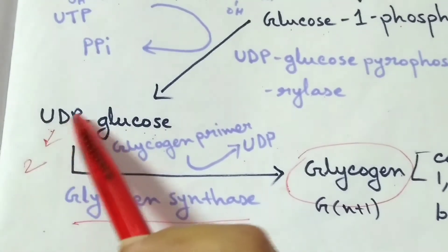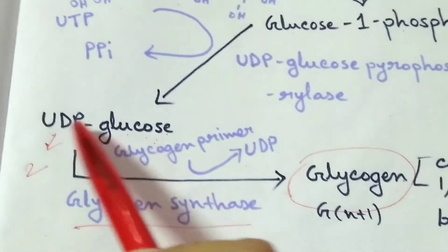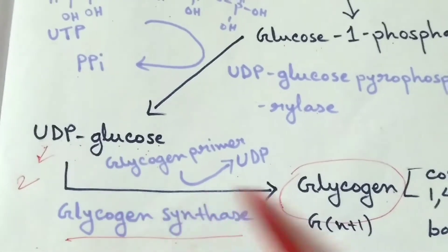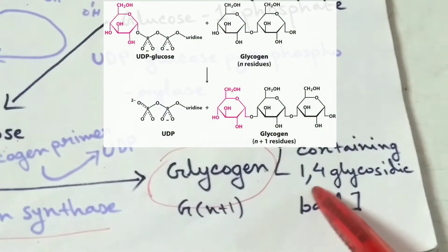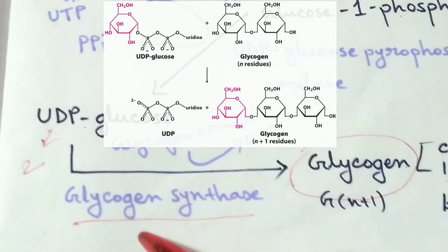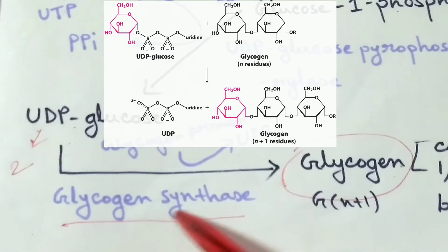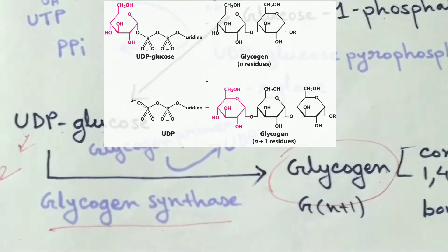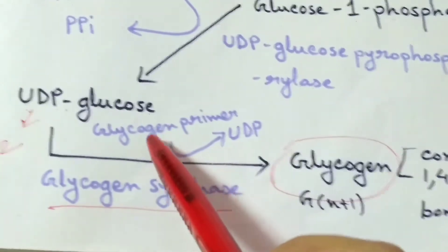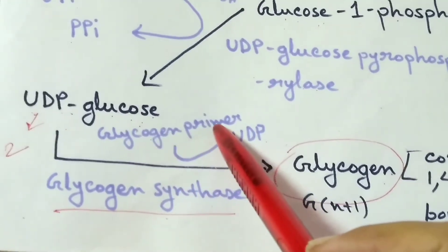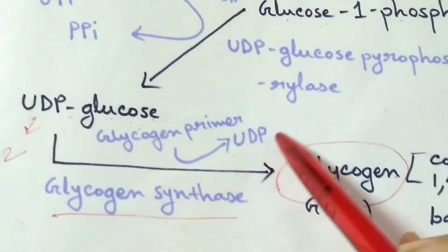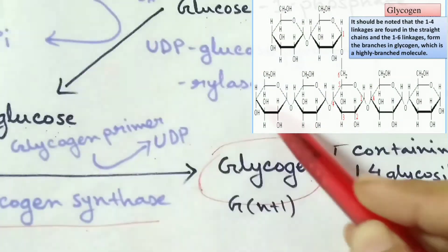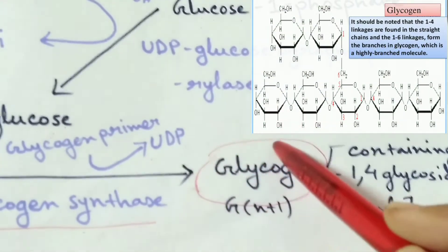In the next step, the uridine diphosphate glucose is converted into glycogen, the final product, which contains the 1,4 glycosidic bond by means of enzyme glycogen synthase. One molecule of glycogen primer is also needed for replacing the uridine diphosphate. So, the final product, glycogen, is formed.